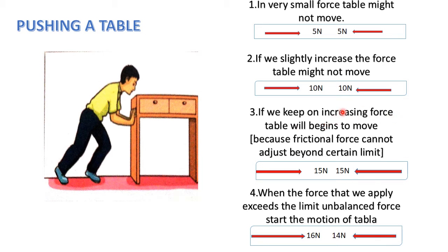If we keep on increasing the force, the table will begin to move. When the table just begins to move, the frictional force acting at that moment is known as limiting friction. For example, we apply 15 Newtons and the floor exerts 15 Newtons opposite to our force — but at this moment, the table just begins to move. So this friction is known as limiting friction.